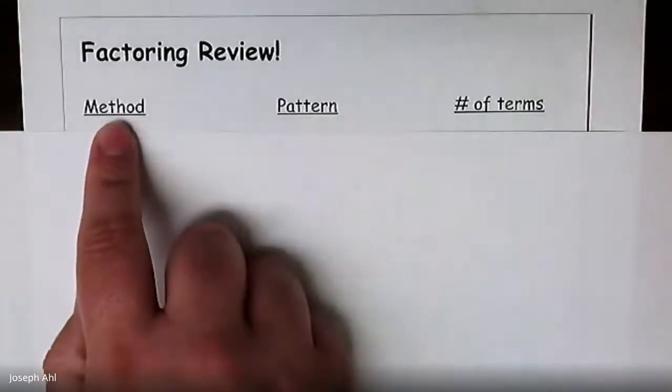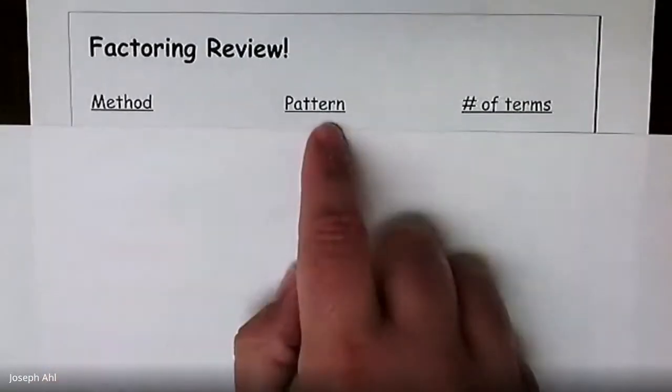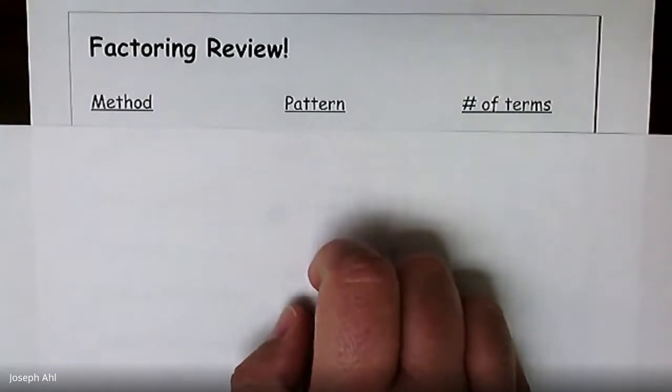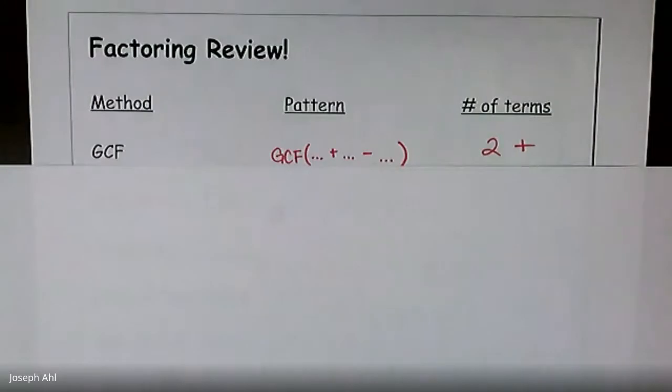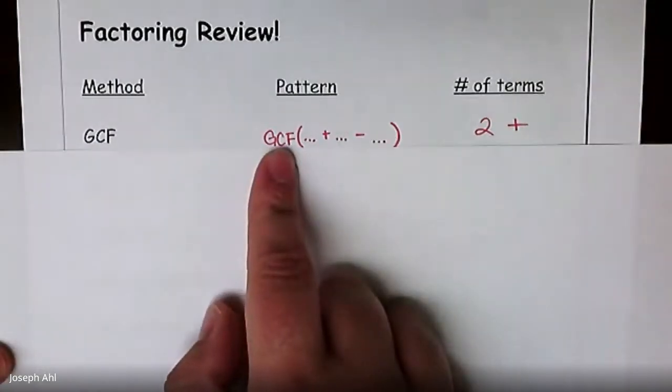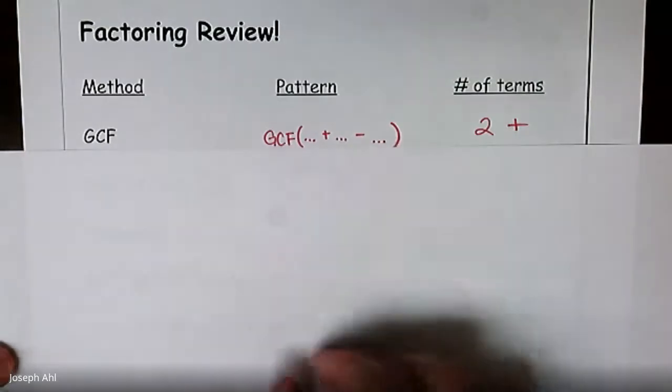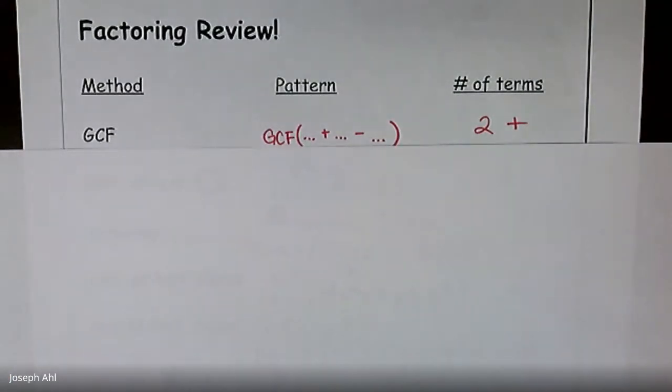So let's make sure we're comfortable with some of these methods. If you want to create a little chart in your notes to get started, we're going to talk about different method names on the left column here, what the pattern is for those, if there is an association for that pattern, and then how many terms to look for, because sometimes that will clue you into which method to choose. But we're going to start with good old GCF, greatest common factor. And the thing about GCF is it's not really super specific in terms of a pattern or number of terms.